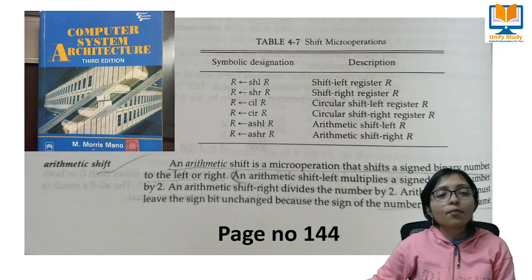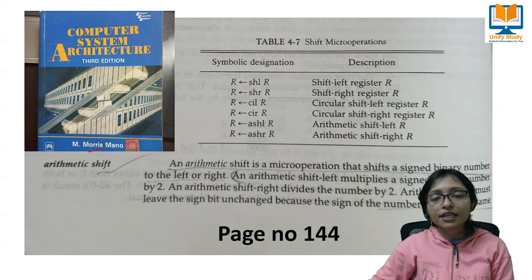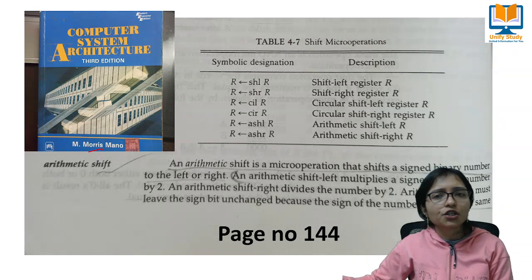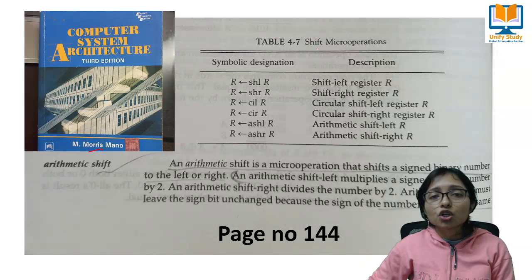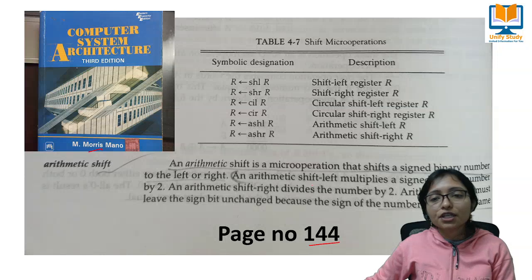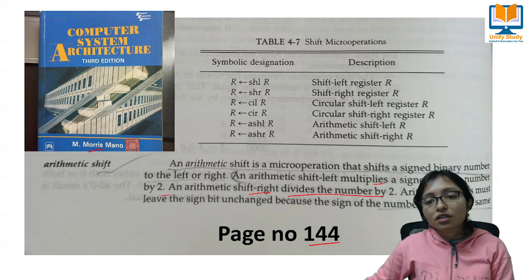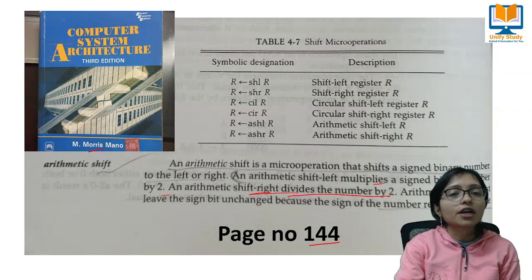Here is the supportive document from the Morris Mano book, third edition, page number 144. It clearly mentions the arithmetic shift operator: shift left multiplies by two, and arithmetic shift right divides by two. This is clearly stated in the book. You can take a screenshot and submit this document as your challenge evidence.